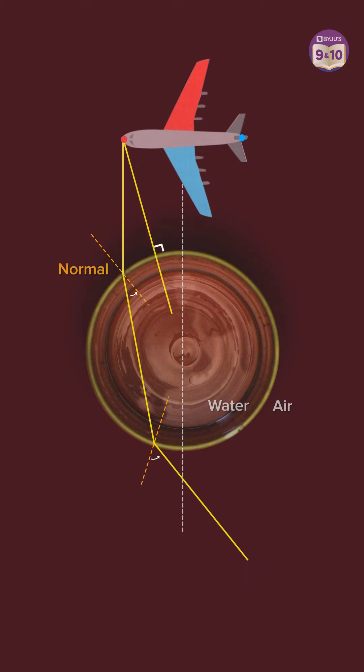The other ray is normal to both surfaces and does not bend. When these rays intersect, they form an image.